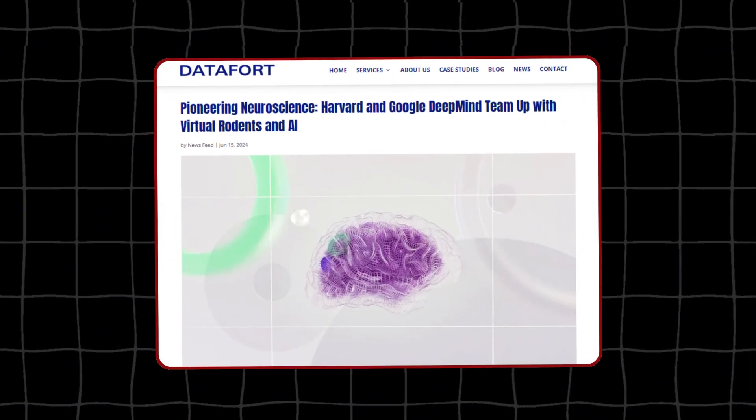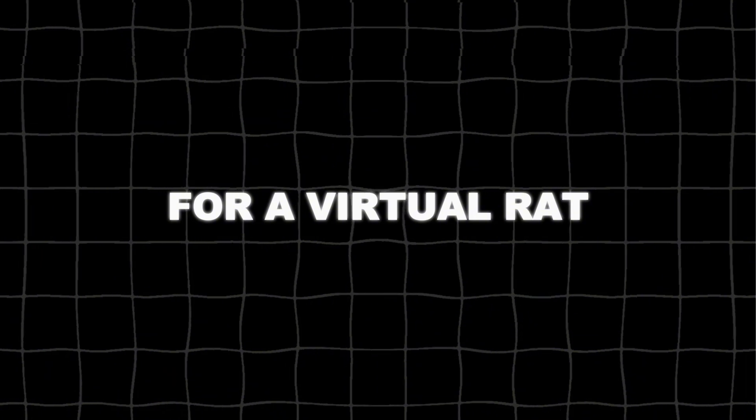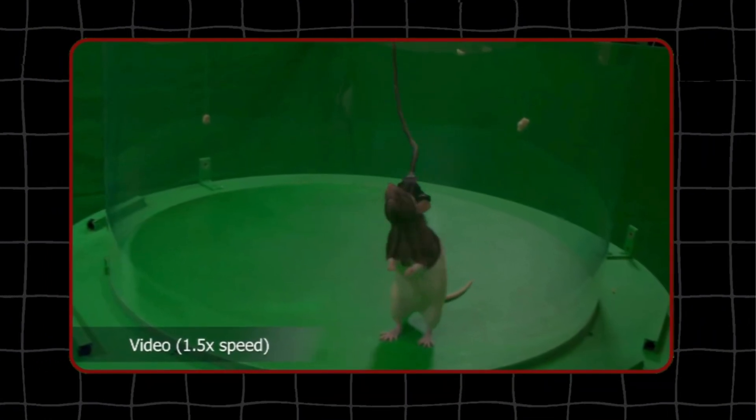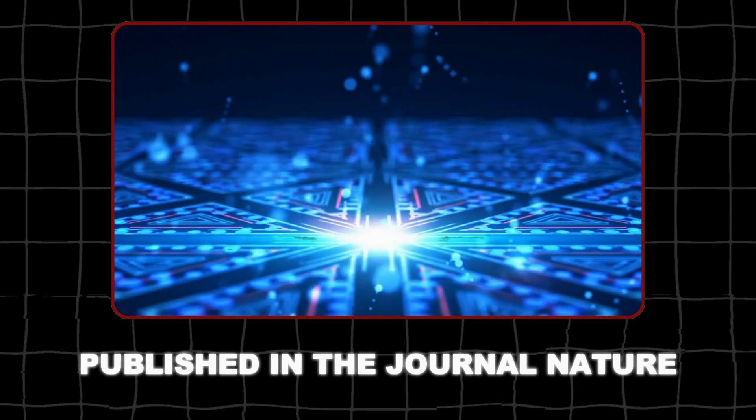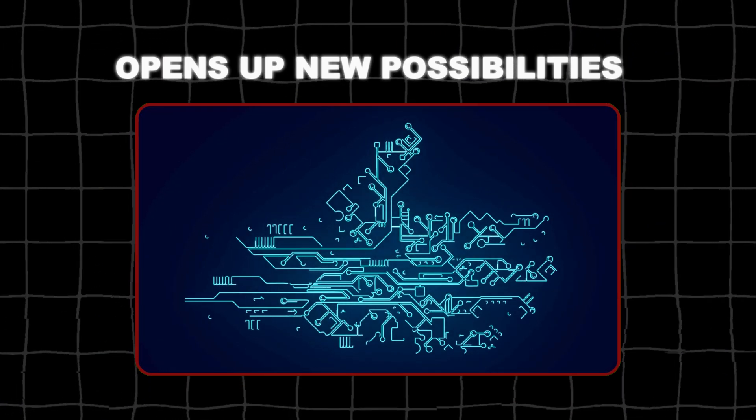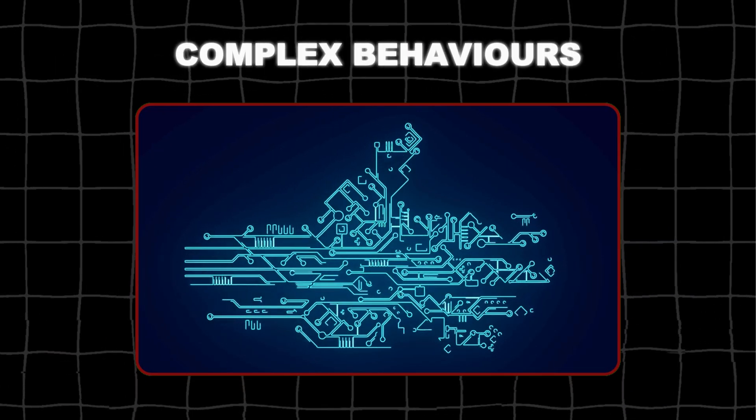That's why they have teamed up with researchers from Harvard University to create an artificial brain for a virtual rat that can control its movements in an ultra-realistic physics simulation. This groundbreaking work, published in the journal Nature, opens up new possibilities for studying brain function and controlling complex behaviors.